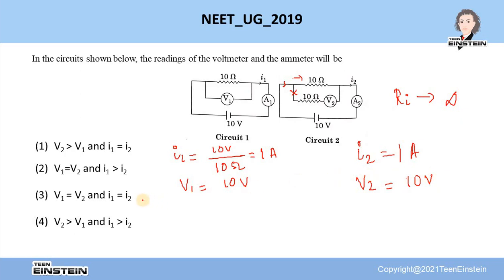Therefore, the third option will be the correct answer for this question. So V1 is equal to V2 and I1 is equal to I2. Thank you.